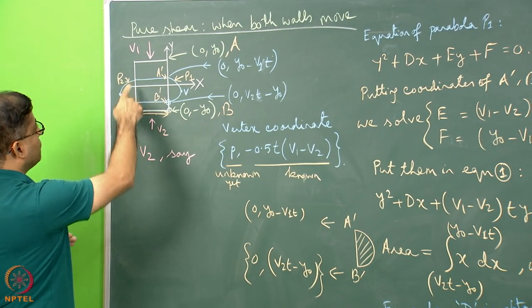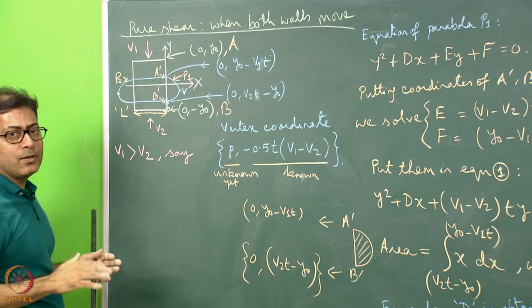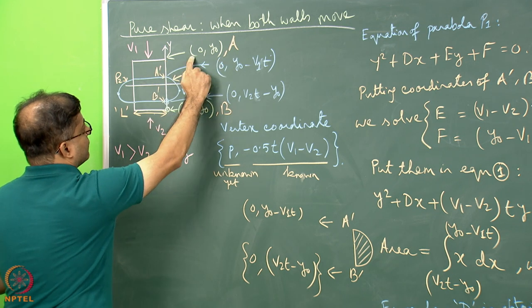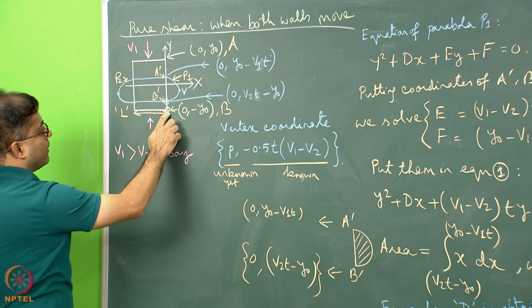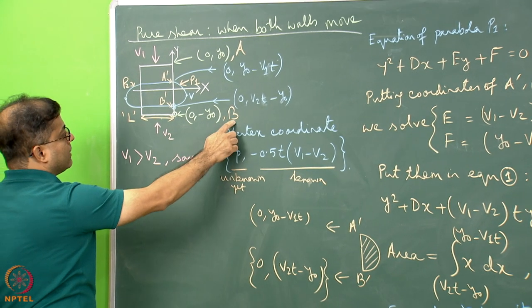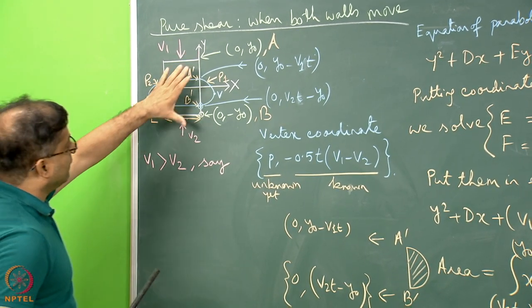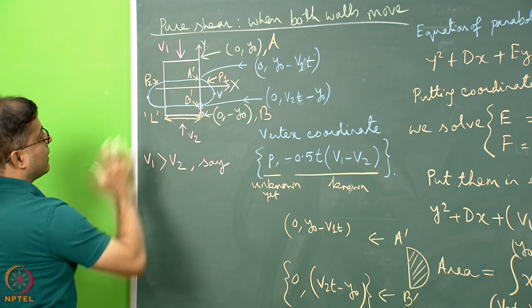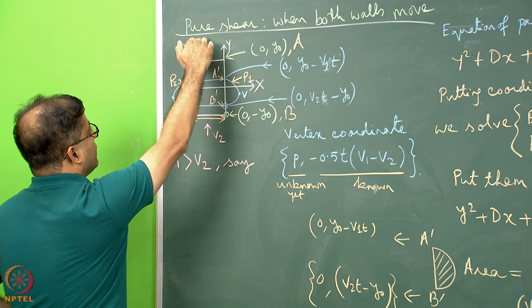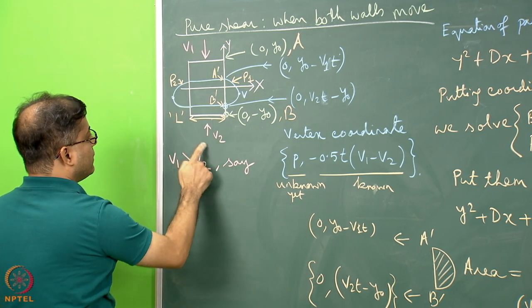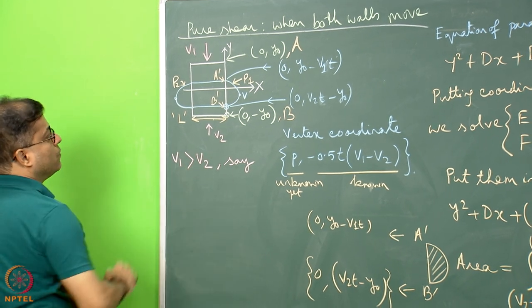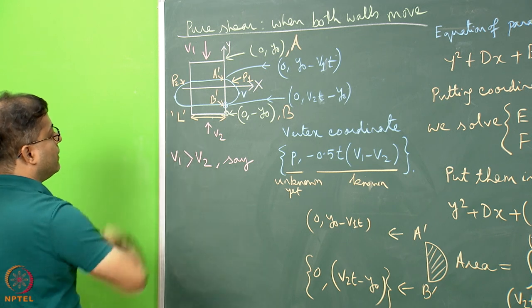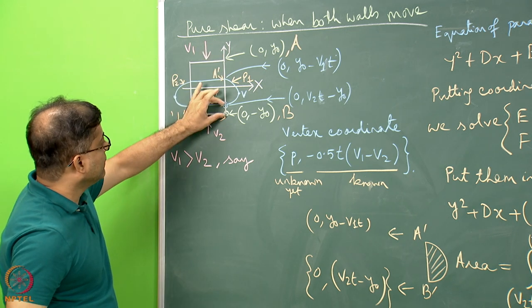Let us introduce the situation. This white rectangle is what we are going to compress. The x-axis lies like this and this is the y-axis. Point A has coordinate (0, y₀) and point B has coordinate (0, −y₀). The total length of the rectangle is 2y₀ units, and the width is capital L. The top boundary is pushed with velocity v₁ and the bottom boundary with velocity v₂, where v₁ is greater than v₂. Since v₁ > v₂, the top white line is displaced more downward than the bottom white line moves upward.